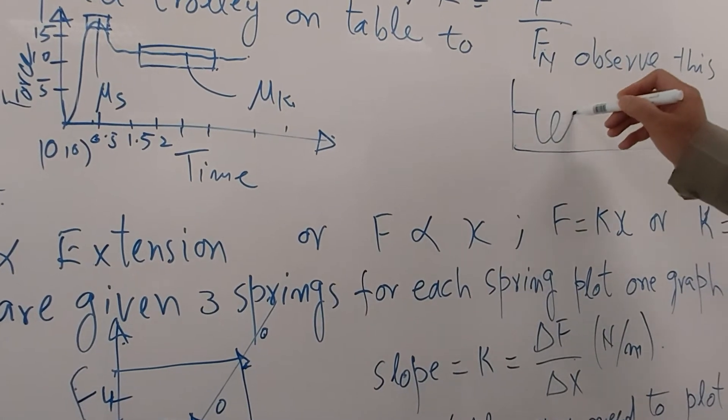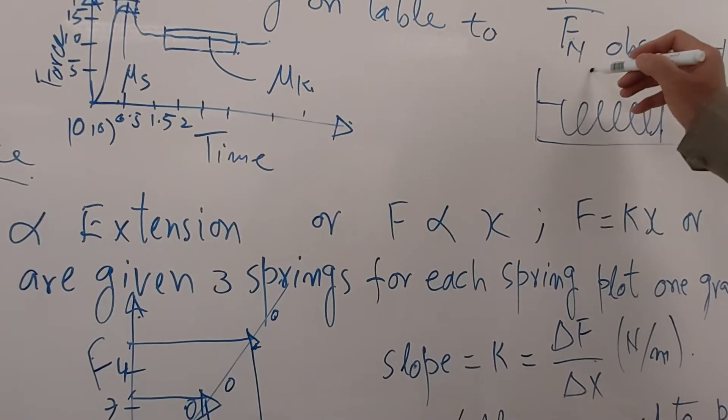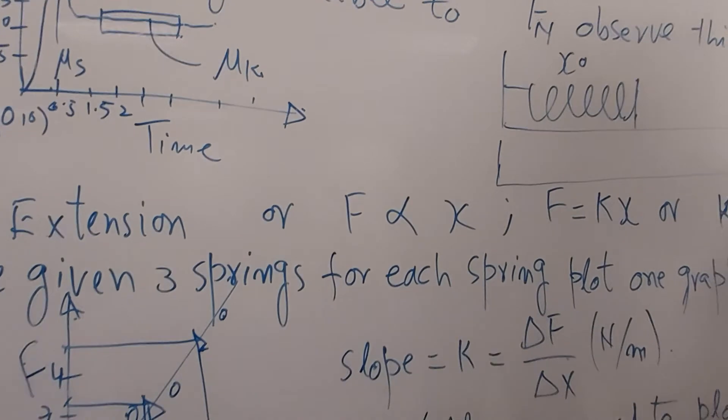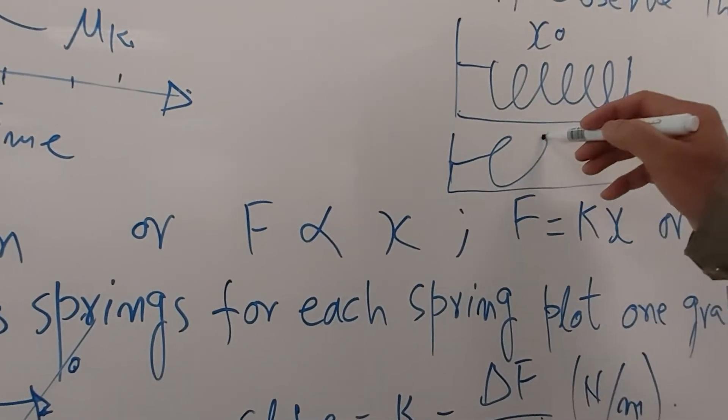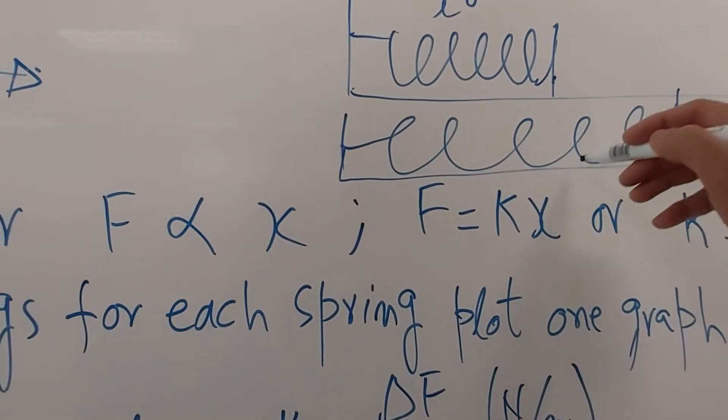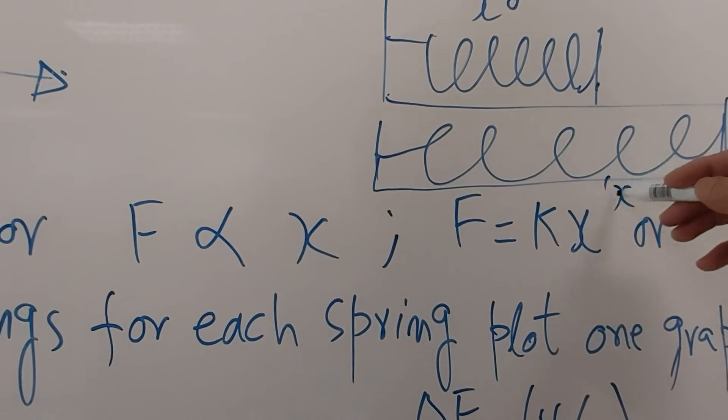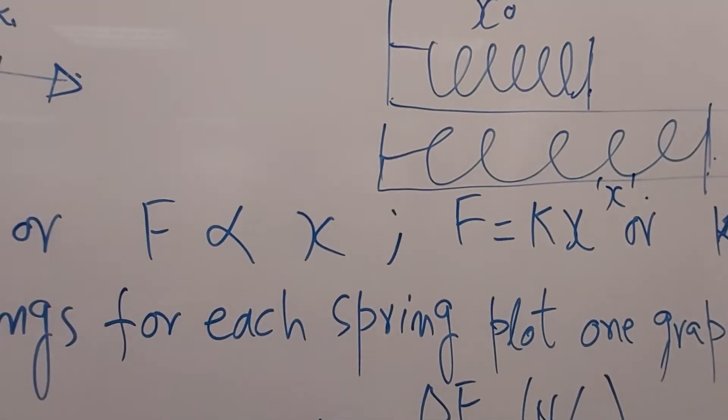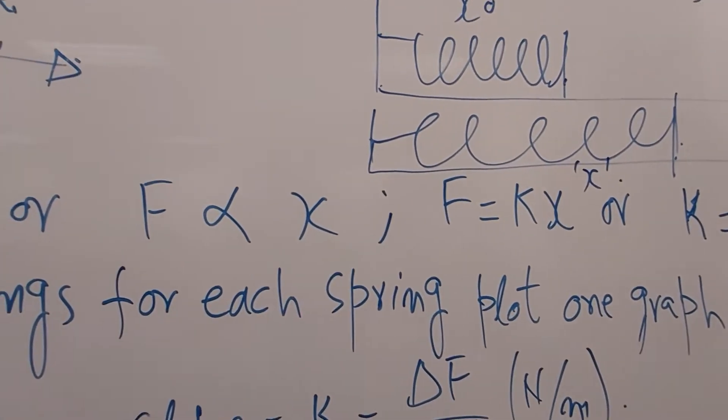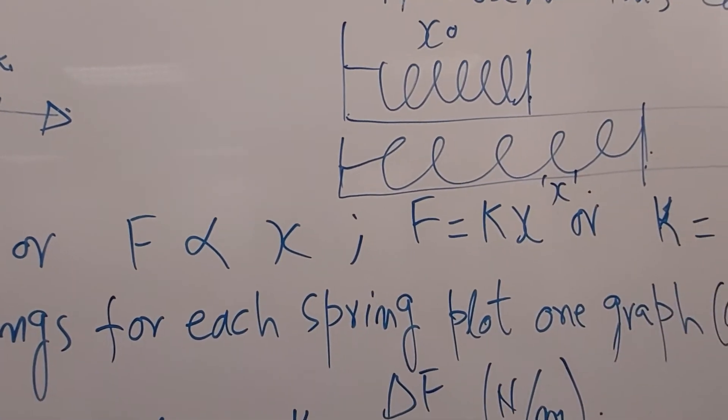This is normal position of the spring. This is normal length x_0. Now if I want to extend this, the spring looks like this. This length here after extended is x. So this is x_0 and this is x. What I need is the extension - how much it has gone up from the normal length.